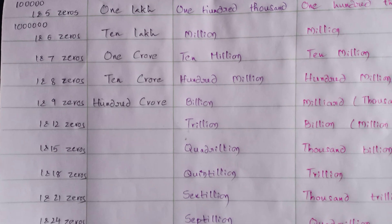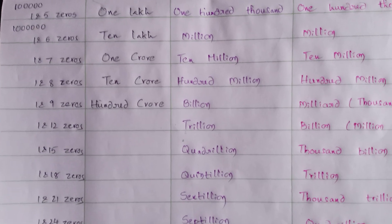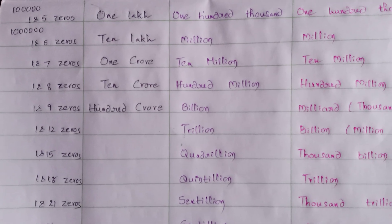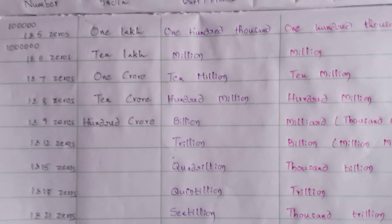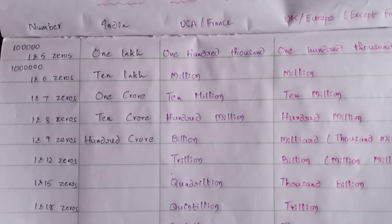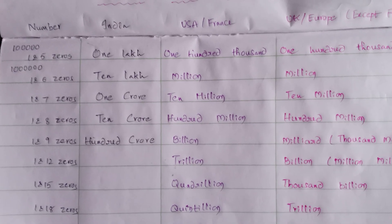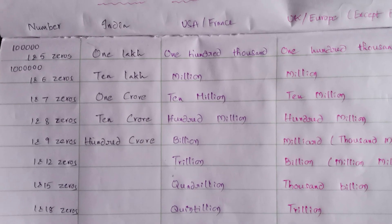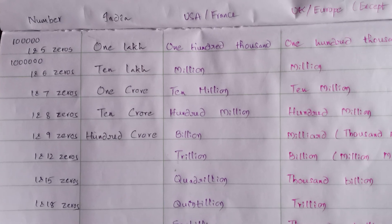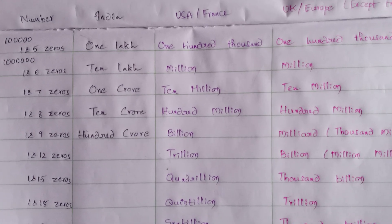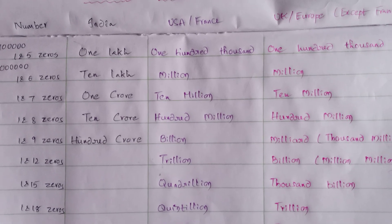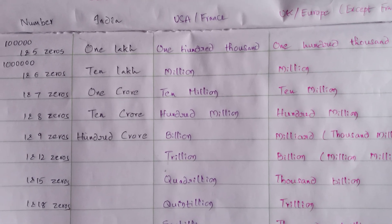1 followed by 8 zeros — in India, 10 crore. In USA, 1 and 8 zeros is known as 100 million. In UK and Europe, 100 million.